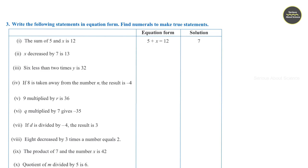Second question: h decreased by 7 is 13. Since h is decreased by 7, we write h minus 7 is equal to 13. Taking the 7 to the other side, h is equal to 20.